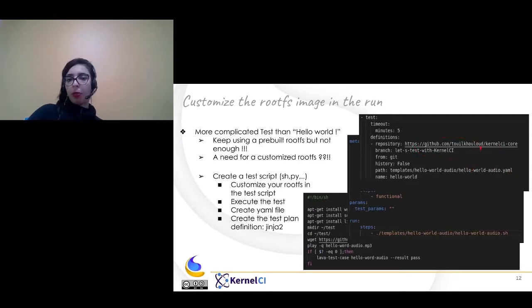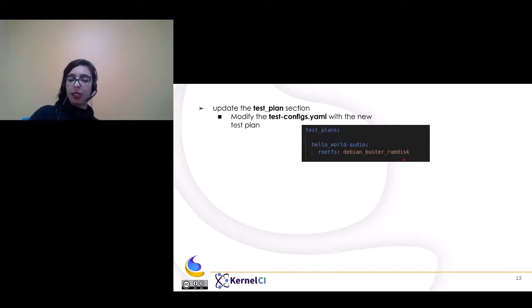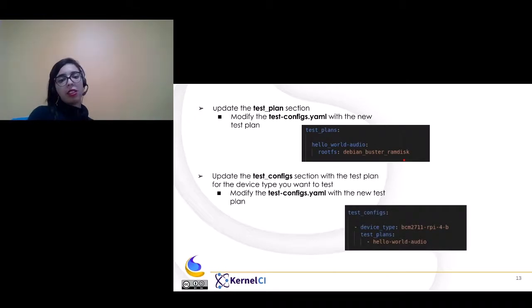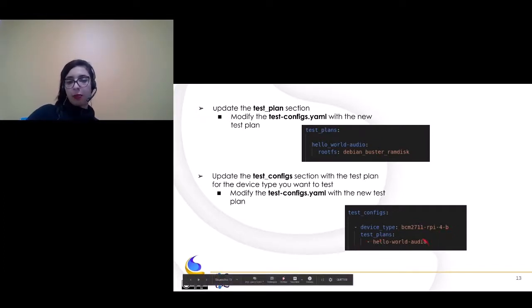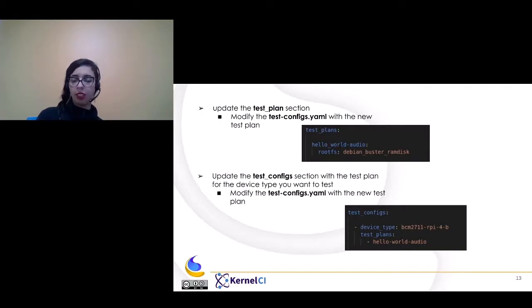We update the test plan section in test.config.yaml, this time naming it "hello world audio" and using the same Debian Buster ramdisk rootfs. In the test config section, we update it for Raspberry Pi 4 with the test plan "hello world audio". So until now we've seen two points: the first is adding a simple test plan definition, and the second is customizing your rootfs image in the run section within your test script before running the actual tests.